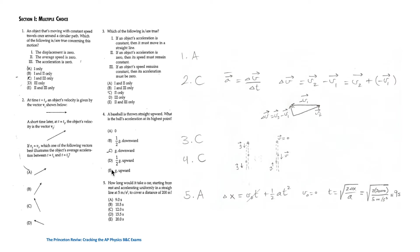So the correct answer for question 1 is A. For question 2, at time t equals t1, an object's velocity is given by vector v1, and a short time later at t2, the object's velocity is given by this vector.